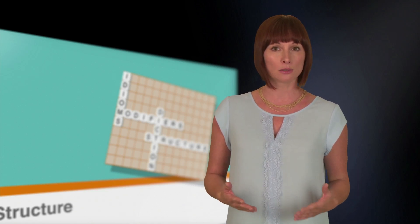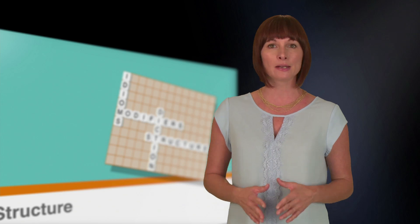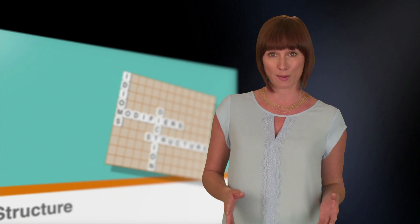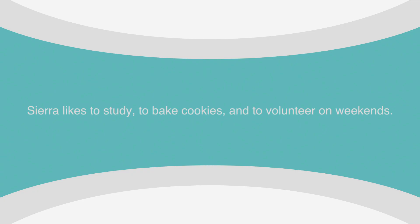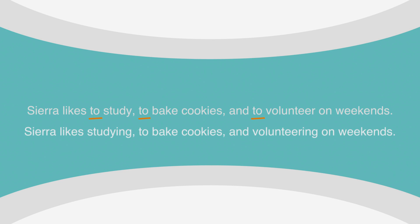So when you compare or list items in a sentence, the items should have the same grammatical form. For example, Sierra likes to study, to bake cookies, and to volunteer on weekends. Each item of this list contains the verb form "to." Without parallel structure, this sentence could read: Sierra likes studying, to bake cookies, and volunteering on weekends. It almost sounds like Sierra likes to study in order to bake cookies, and it definitely sounds clunky.